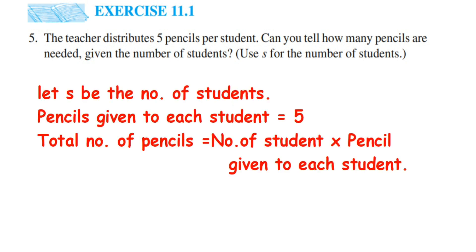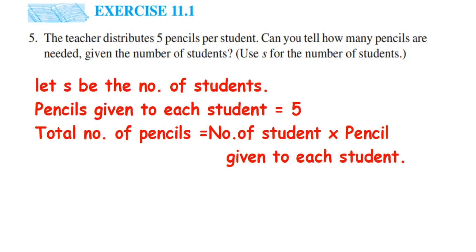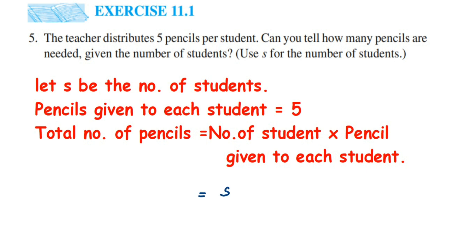Let's write down the answer. Let s be the number of students. Pencils given to each student is 5. To count the total number of pencils, it will be number of students multiplied by the number of pencils given to each student, which is 5. Number of students is s, so it is s×5, or we can rewrite this as 5s. I hope this question is clear — in case you have a doubt you can drop a comment.